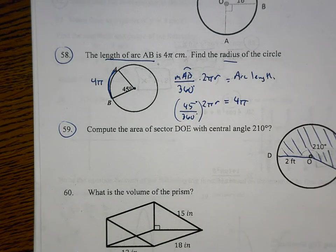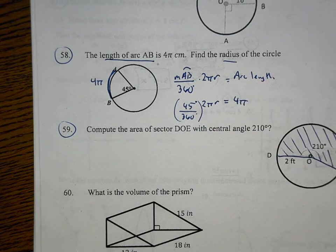So I'm setting up my equation, which is 45 divided by 360 times 2πr equals 4π. I'm just going to use the fraction button on my calculator. 45 over 360 reduces. This is the same thing as one-eighth.